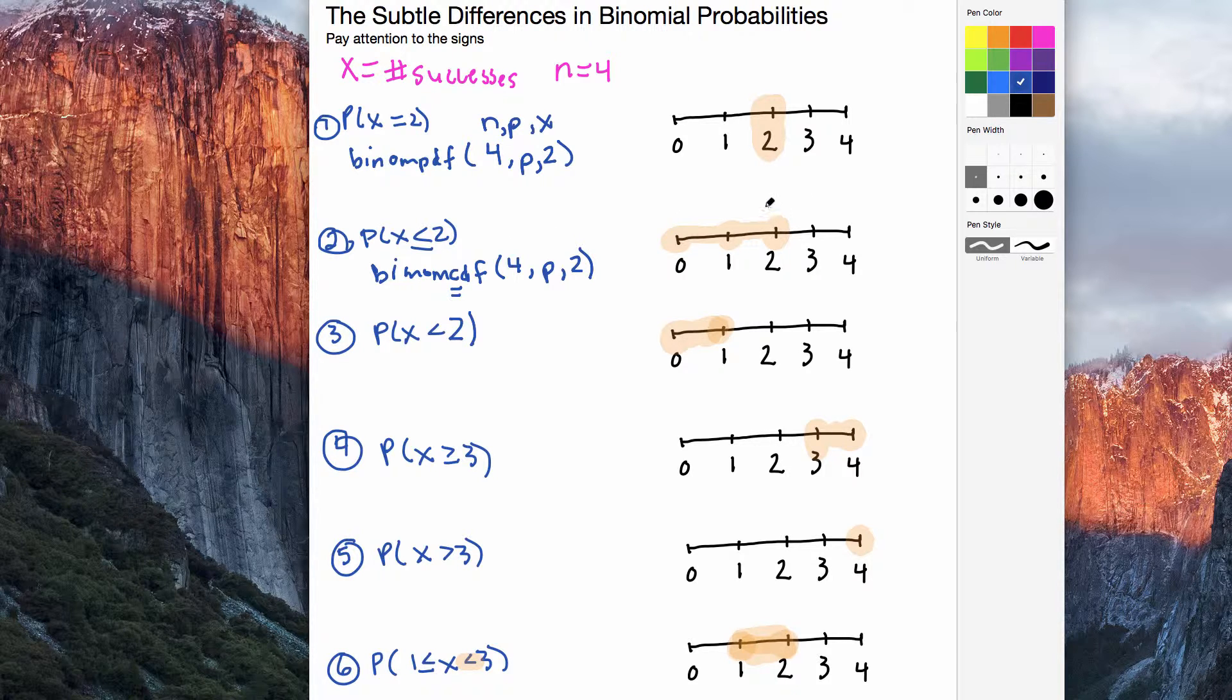So starting at 2, going down to 1, adding the probability of 1 success, adding the probability of 0 successes. On the first one, we use PDF. You kind of think of it as for probability, single probability. We only wanted 2, so I had only highlighted 2 here.